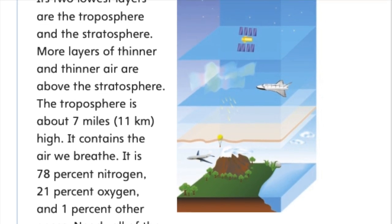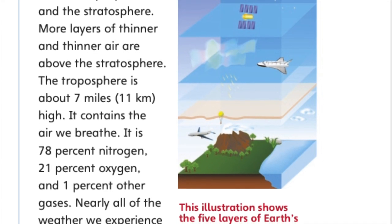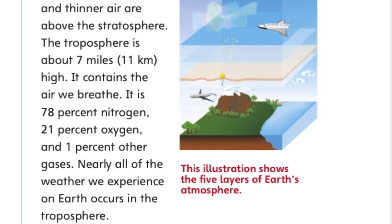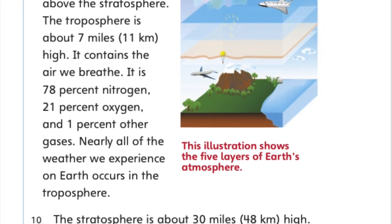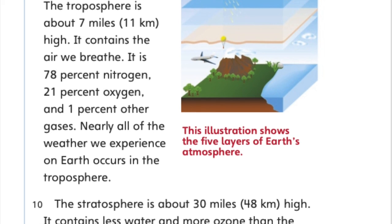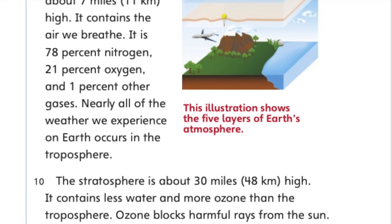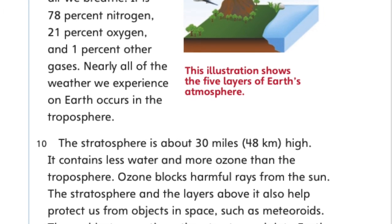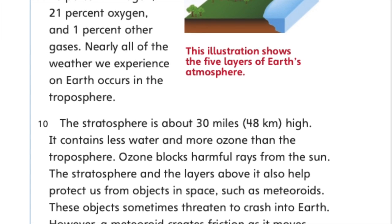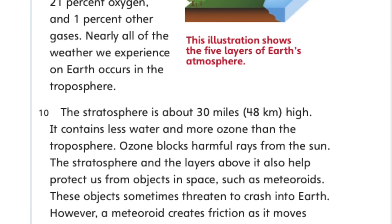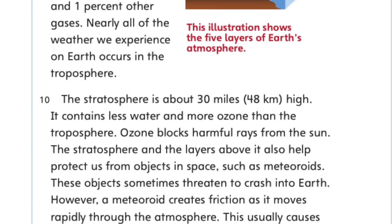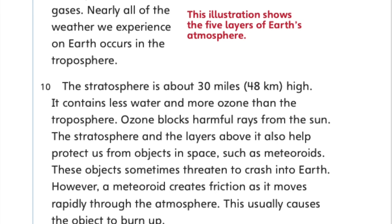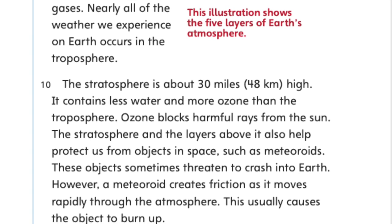Nearly all of the weather we experience on Earth occurs in the troposphere. The stratosphere is about 30 miles high. It contains less water and more ozone than the troposphere. Ozone blocks harmful rays from the sun. The stratosphere and the layers above it also help protect us from objects in space, such as meteoroids. These objects sometimes threaten to crash into Earth. However, a meteoroid creates friction as it moves rapidly through the atmosphere. This usually causes the object to burn up.